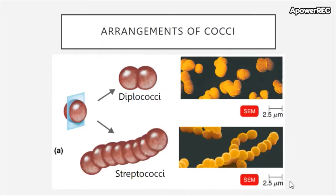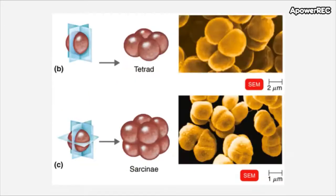Note the size of the microbes we're looking at with the scale bar — these microbes are on the range of about 0.8 to 1.5 microns in size. It may be confusing at times because these can make what appears to be a spiral shape, but note that this is made up of individual cells, so this would be a streptococci. Again, because plane of division determines the arrangement of the bacterial cells.